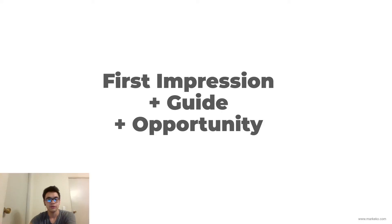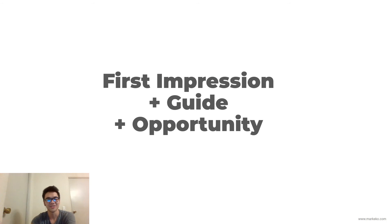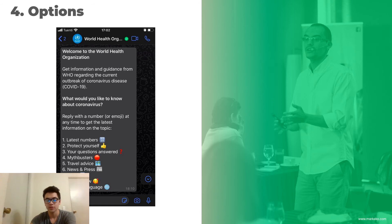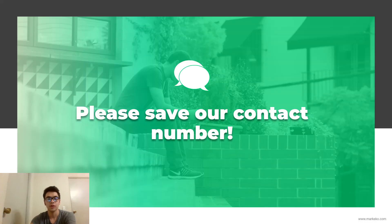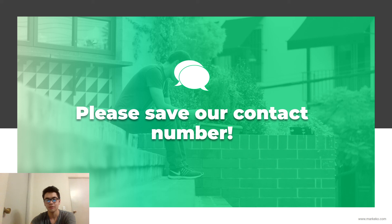There's one thing we haven't covered yet: opportunity for future contact. You've got to set yourself up for future contact. The way you do that is you need to absolutely ask people to save your contact number on their phone. This is because when you send broadcasts, people won't receive them if they don't have you saved. If they have your number saved, they'll receive it. If they don't, the broadcast you send to a thousand people will reach nobody. So make sure you highlight it — put it between red emojis or something — and let them know.